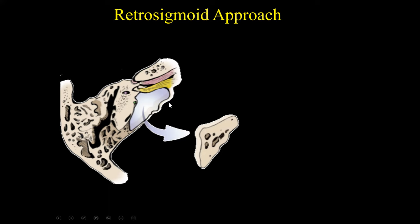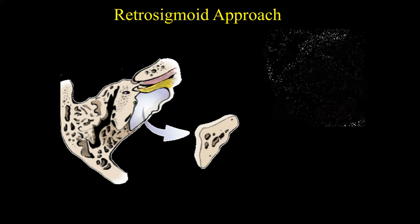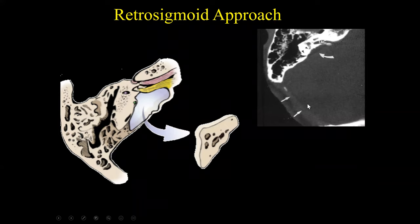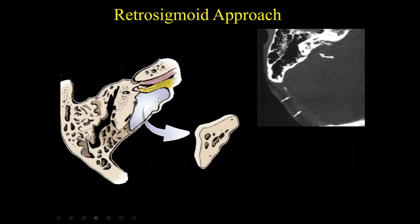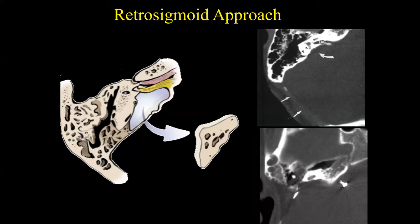There are a couple of approaches to resection of vestibular schwannomas. One is the retrosigmoid approach, typically done in collaboration with neurosurgery. They perform a posterior fossa craniotomy, which allows access to the posterior aspect of the petrous apex. They can then drill away the superior portion of the petrous bone to access the superior vestibular nerve and the facial nerve. Retrosigmoid approaches are performed in patients who still have hearing, as an attempt to remove the schwannoma while preserving hearing. Postoperatively we can see the posterior fossa defect and resection of the petrous apex.